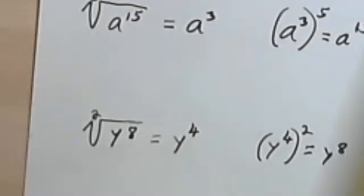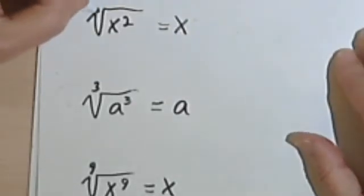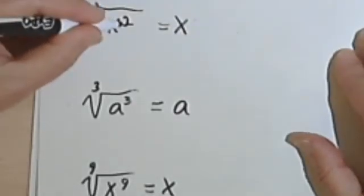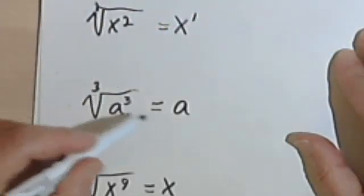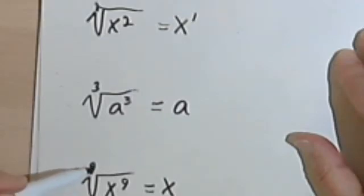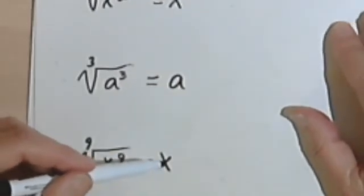When we did the other ones, just to go back to them for a second, you can think of yourself as doing the same thing. 2 divided into 2 is 1. This is x to the first. 3 divided into 3 is 1. This is a to the first. 9 divided into 9 is 1. And this is x to the first.